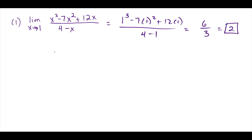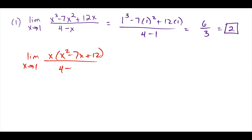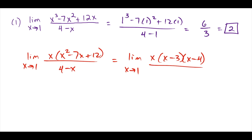Another way we could have done this, which would have taken more time, is to simplify algebraically. We take the limit as x approaches 1, factor out an x, and have x times (x squared minus 7x plus 12) over (4 minus x). Then we break the quadratic into two factors: x times (x minus 3) times (x minus 4). The shortcut is that negative 3 plus negative 4 gives the middle term negative 7, and their product is positive 12.